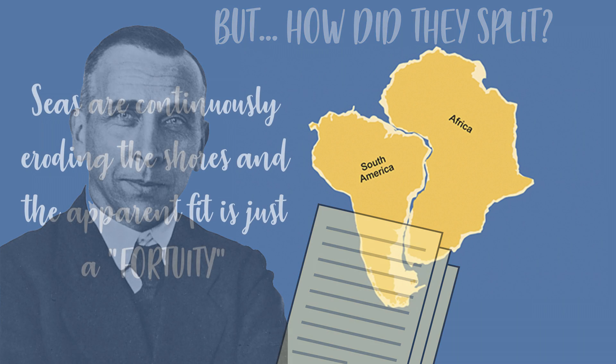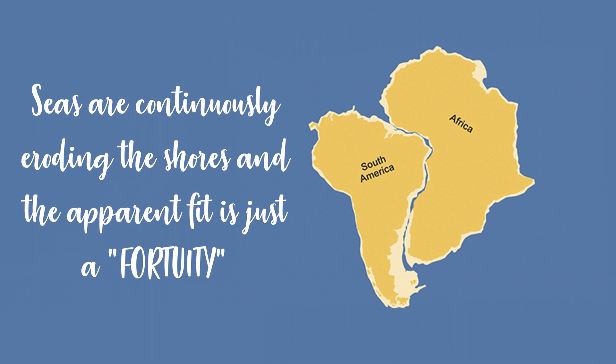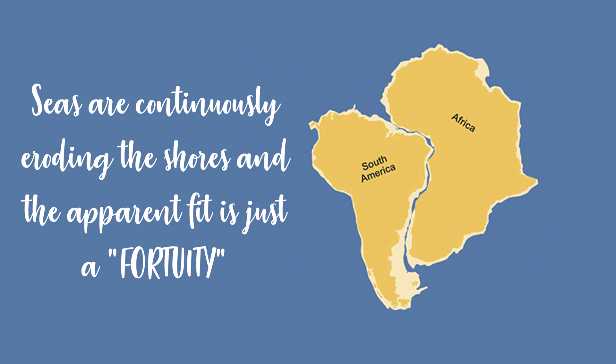The continents didn't fit together perfectly, so he faced a lot of criticism for it. He was also told that the coastline is constantly being modified by the erosive action of the sea. So even if it was true that the continents had been together in the past, the sea would have modified the coastline so much that they wouldn't fit together again.